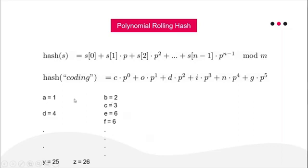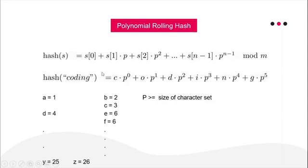So we map characters to integers starting from 1, and use those values in the hash computation. The prime p should be greater than or equal to the size of the character set. If you're using only small letters, that's 26, so p > 26. If you're including capital letters too, that's 52 characters, so p should be greater than or equal to 52 and must be prime.